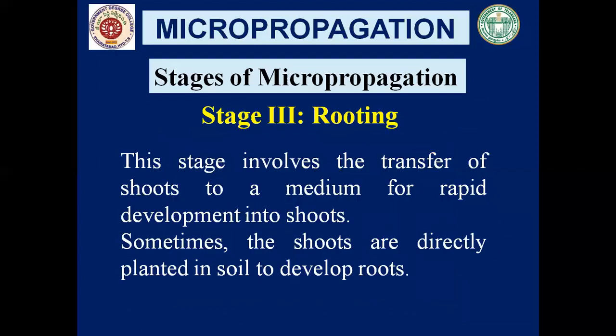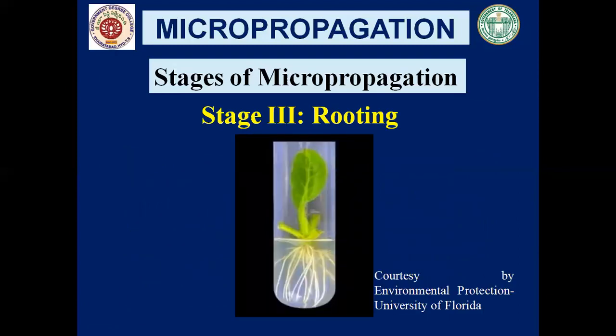Stage 3 is rooting. We now have the shoots; what we require is root formation. This stage involves the transfer of shoots to a medium for rapid development of roots. To develop roots, we add auxins to the medium. When auxins are added in high concentration, it results in the formation of roots. A piece of shoot is excised from the multiple shoots and subcultured into another nutrient medium where auxin is in high concentration, resulting in root formation. This is known as rooting.